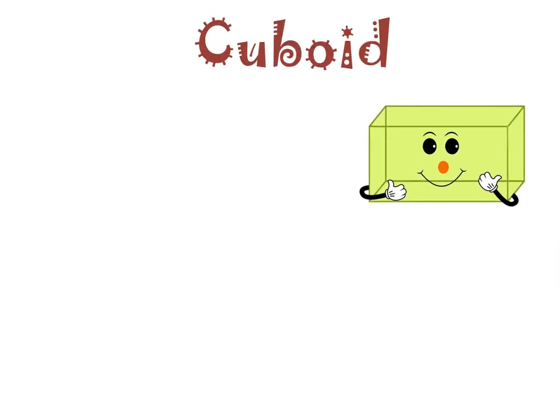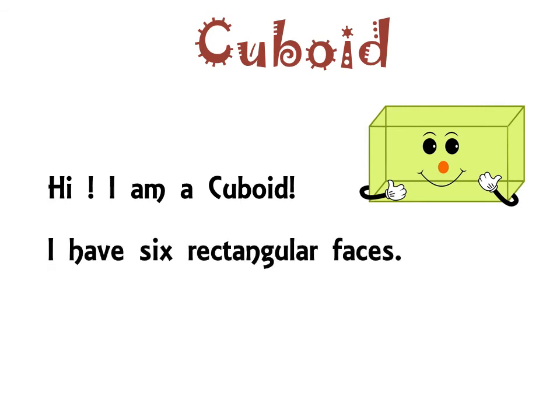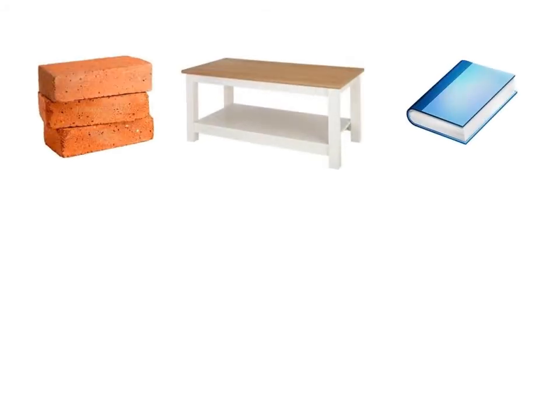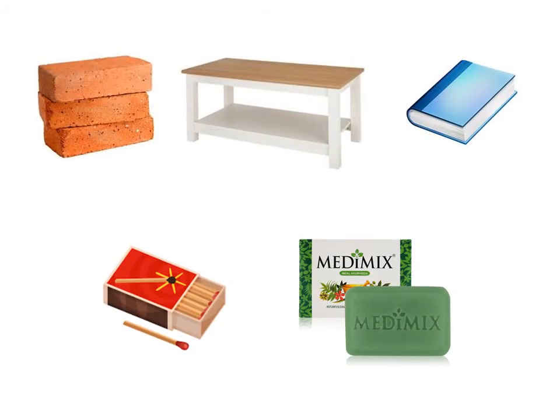Cuboid. Hi, I am a cuboid. I have six rectangular faces. I am a box-shaped object. Let us see few objects that have a 3D shape of a cuboid. All these objects are in the shape of a cuboid.